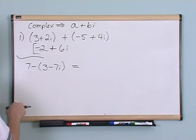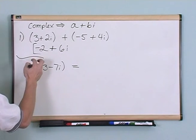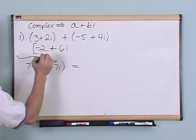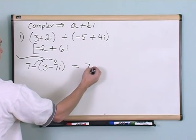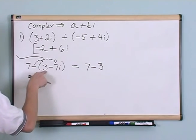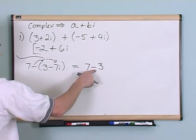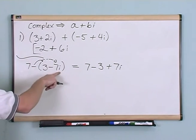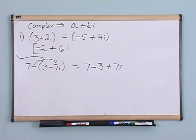But before we do that, I want to simplify this a little bit. I want to distribute this negative 1 here that I have sitting out. So I'm going to have 7 minus 3, negative 1 times 3 is negative 3, plus 7i. Negative 1 times negative 7i gives me positive 7i.